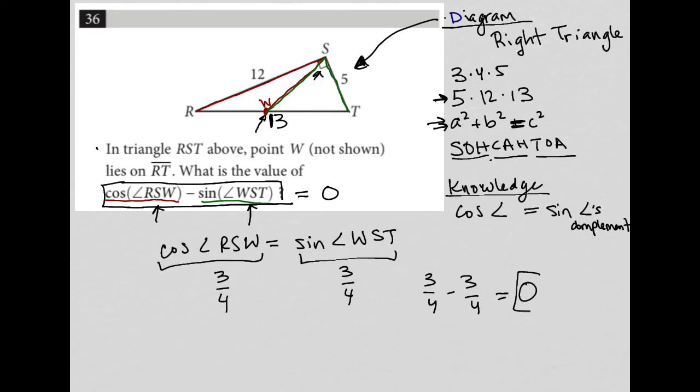Well, that's just zero. So because those two values, the cosine of angle is equal to the sine of that same angle's complement, then when we subtract them, we get a solution of zero.